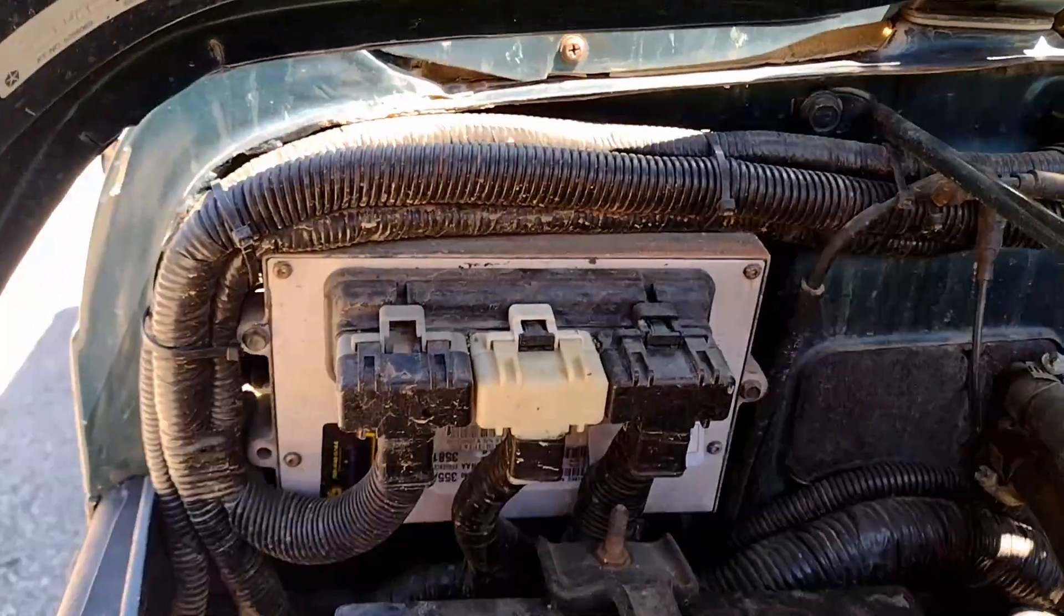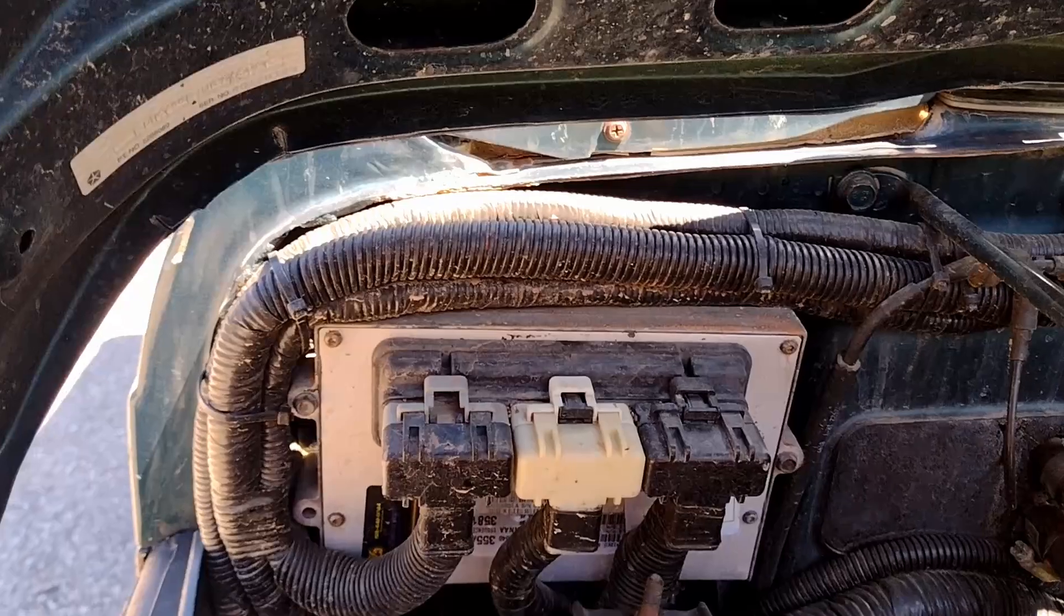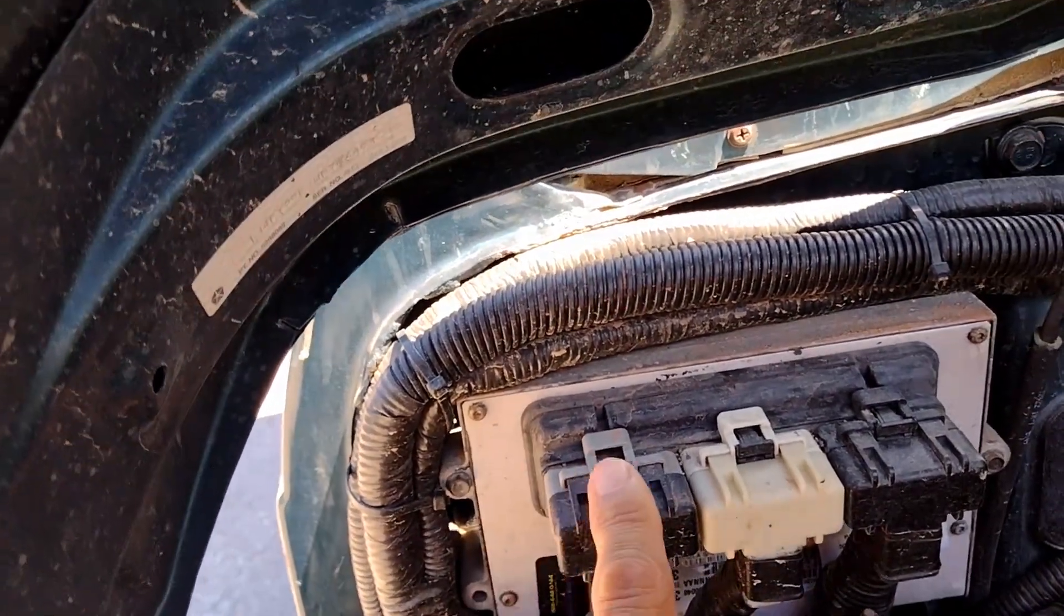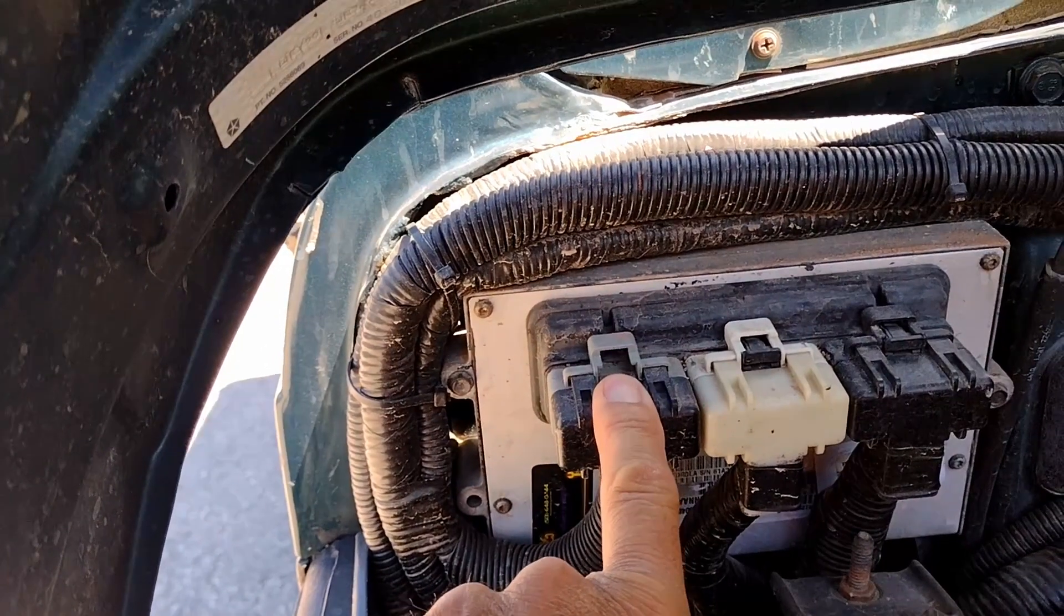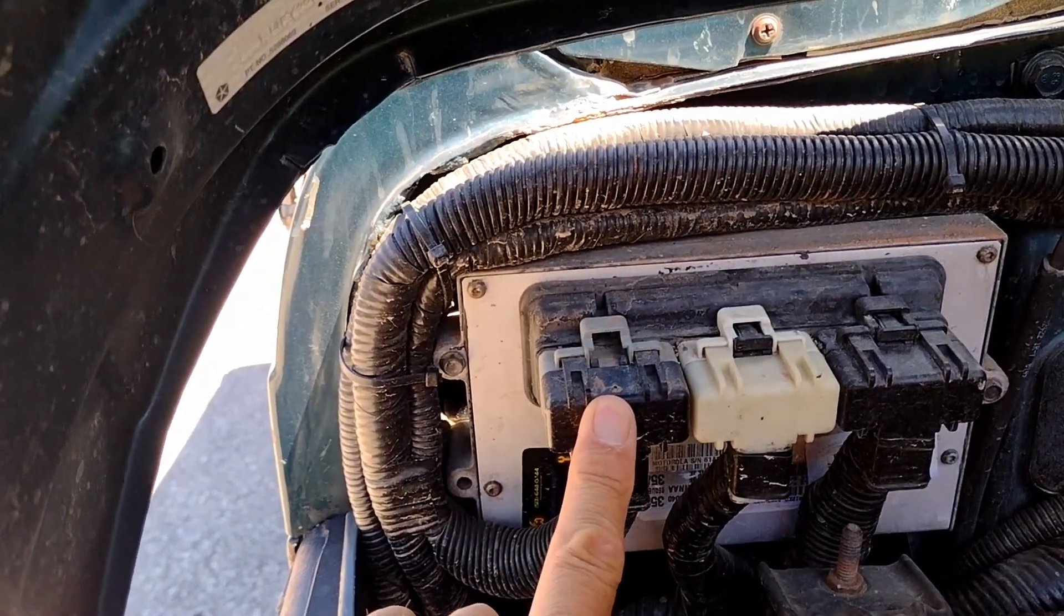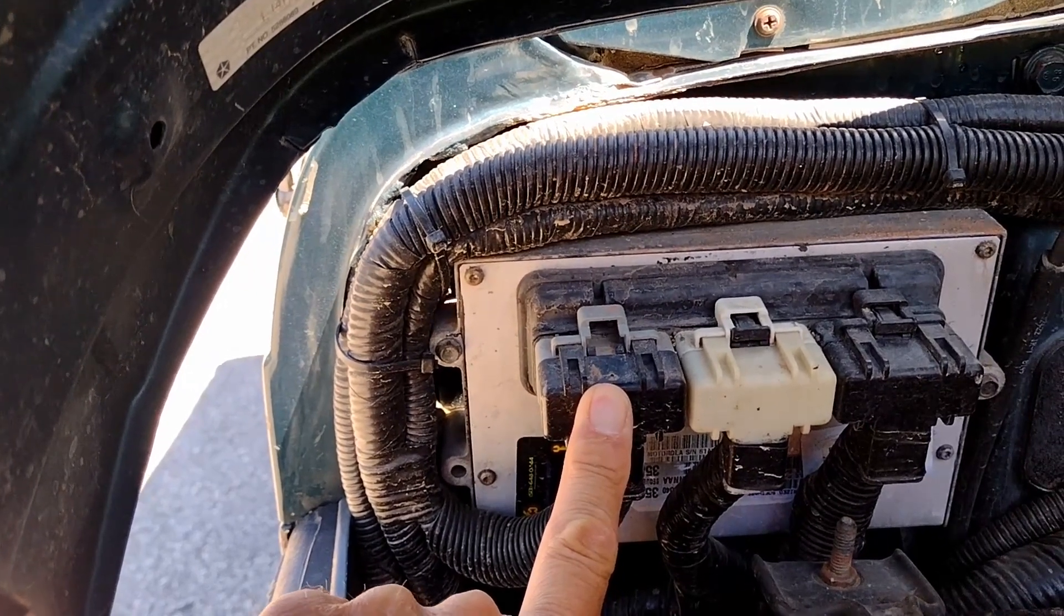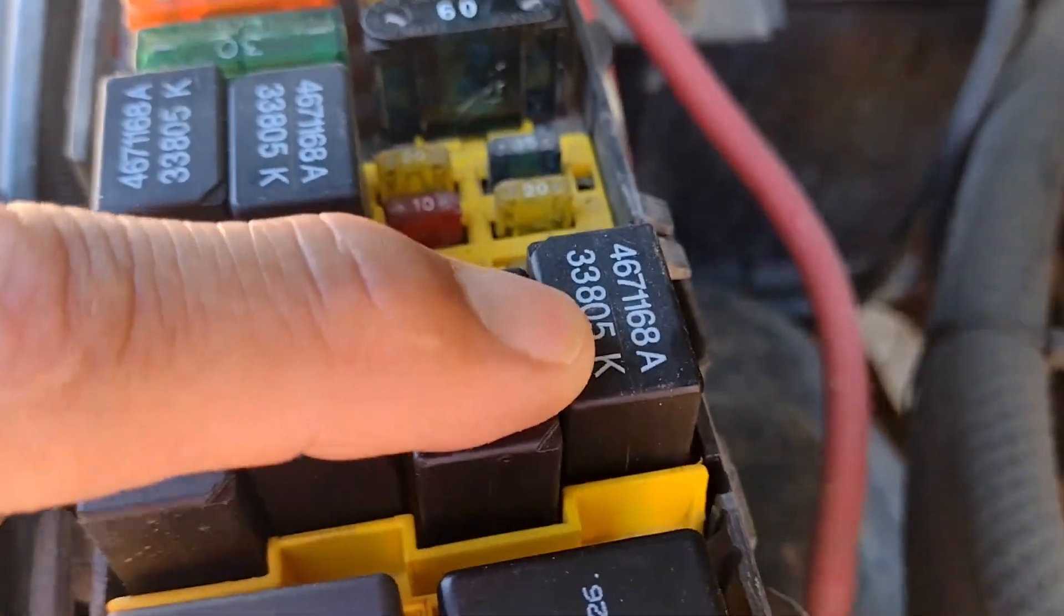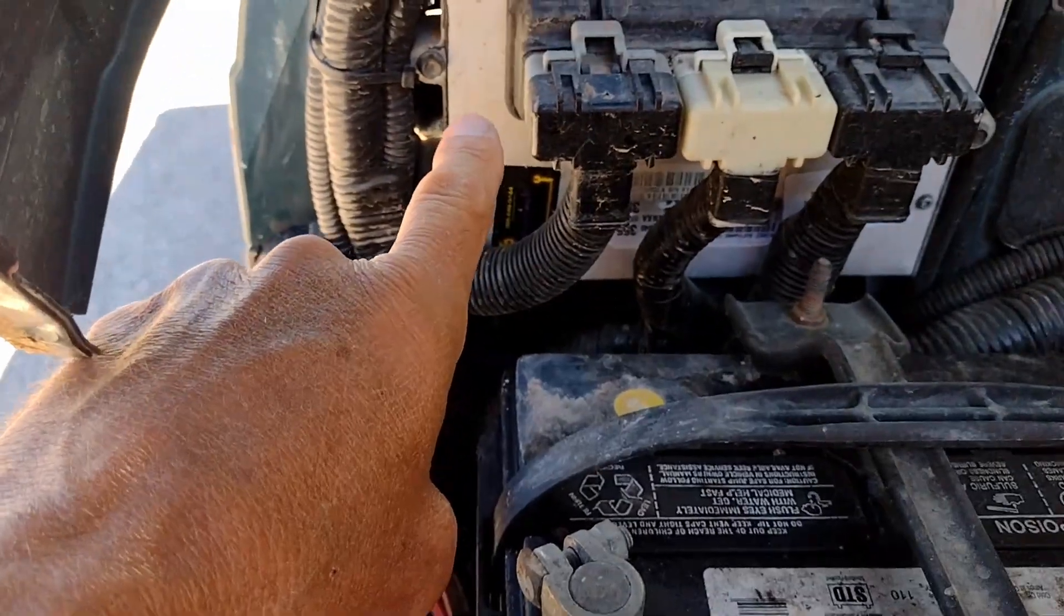Your automatic shutdown relay trigger comes from your power control module, which is right here. As you're standing looking at it, it's going to be on the left-hand side. This is part of your Jeep's existing wiring harness. That wire is already contained that turns on this relay in here.